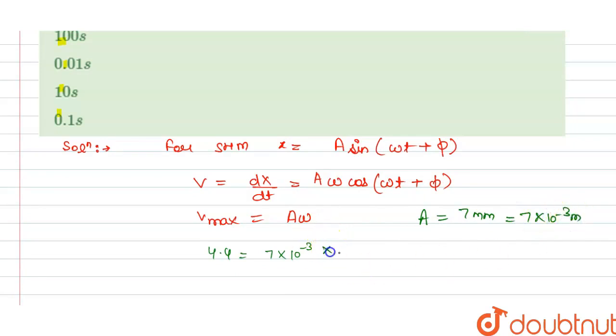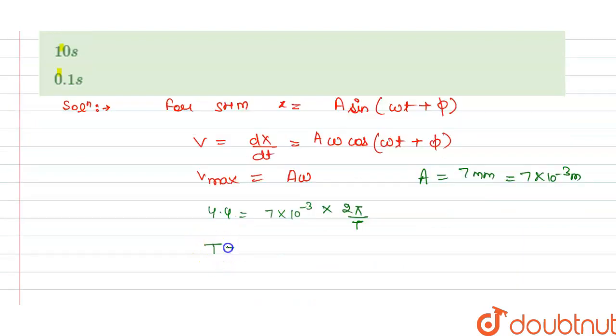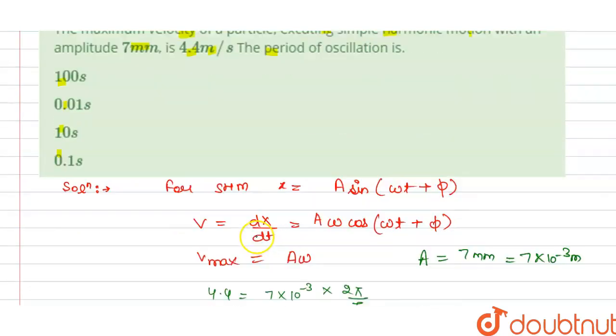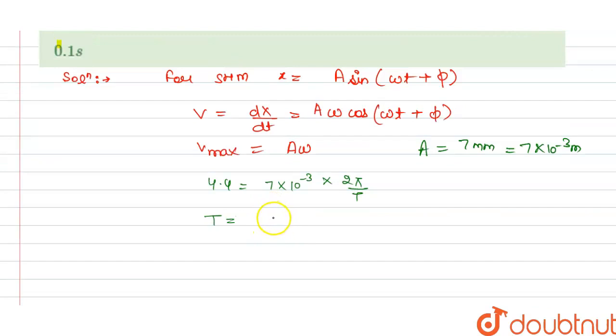And omega is 2π divided by time period T, so from this we get T equals to... that is the period of oscillation, time period of the oscillation is 9.99 × 10^-3, and this will equal to 10 × 10^-3, and this is equal to 0.01 seconds.